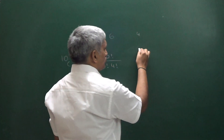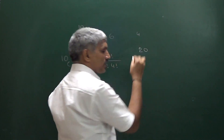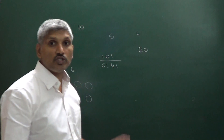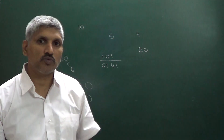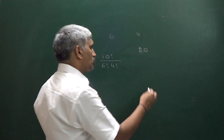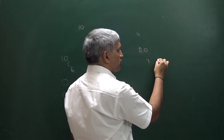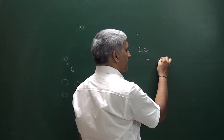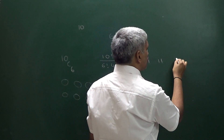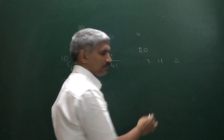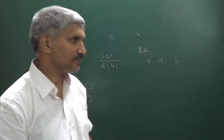Now suppose we have a total of 20 items. These 20 items we have to divide into 3 groups: one group containing 7 items, another group containing 11 items, and one more group containing 2 items. How many different ways can we divide?